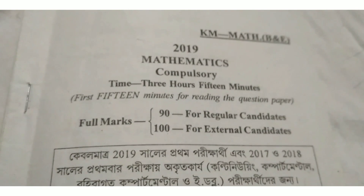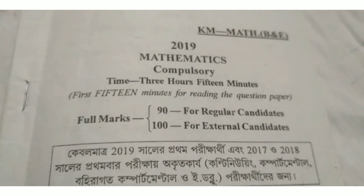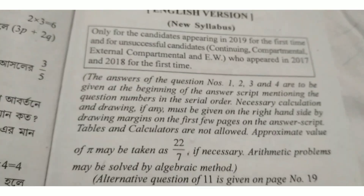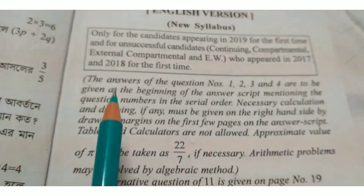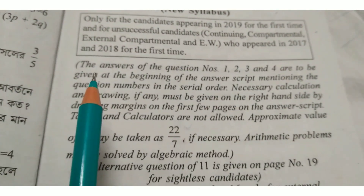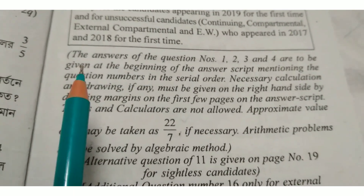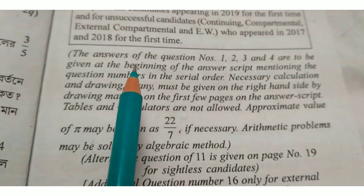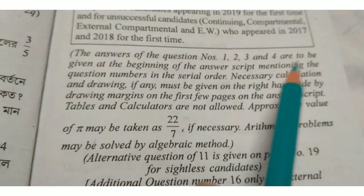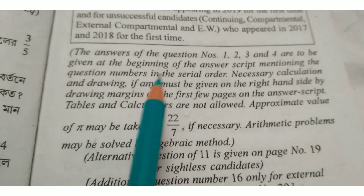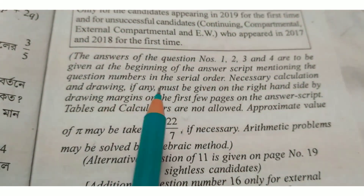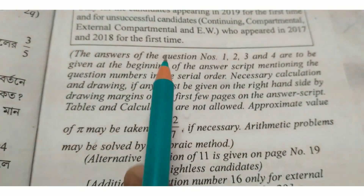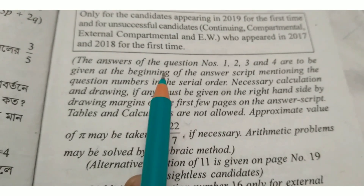Here is the 2019 Mathematics Question Paper. Now I discuss about your Maths question pattern. The instruction is very important: the answers of question numbers 1, 2, 3 and 4 are to be given at the beginning of the answer script, mentioning the question numbers in serial order. This portion is very important.